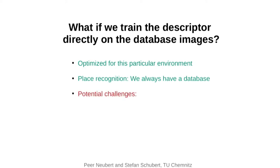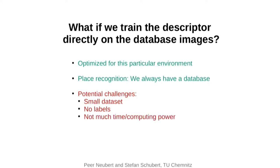In place recognition we always have a database we can use for training or fine-tuning. However, there are challenges: the database might be small — just a few hundred images; very importantly, we do not have labels, no ground truth about which database images show the same place; and in downstream tasks like loop closure detection for online SLAM, we might not have a lot of time or computing resources for training. This descriptor will also be environment-specific and not applicable to other environments.